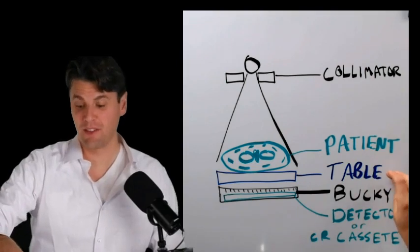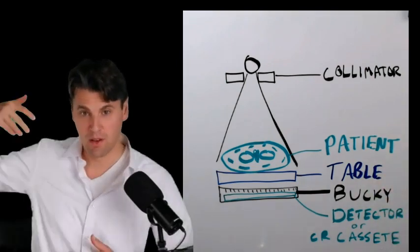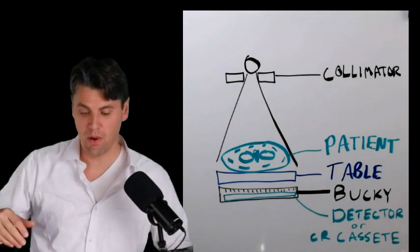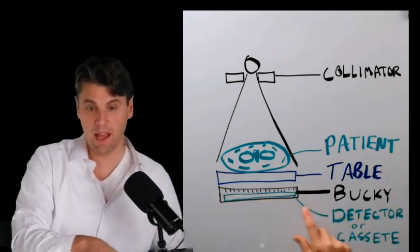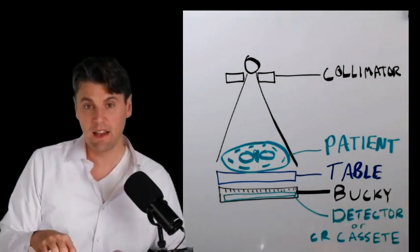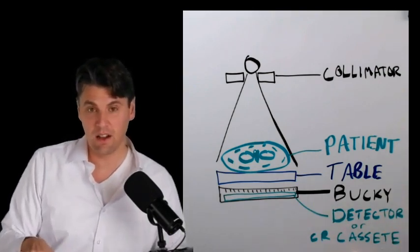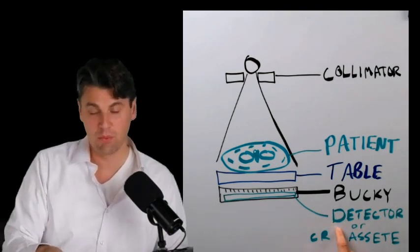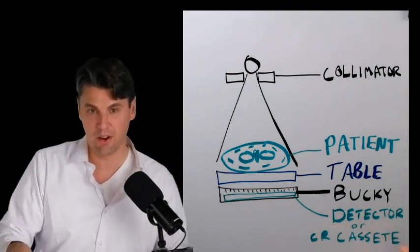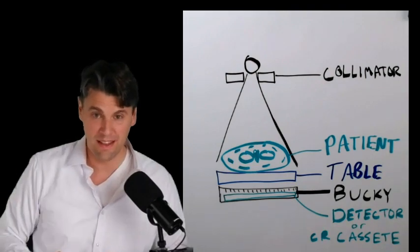The patient is often lying on the table. We'll talk also about standing positions as well. And then you have a bucky and within that bucky you can have a cassette that can actually contain a CR cassette. We'll talk just a minute about what computed radiography is, as well as it could contain a detector. That's in the case of digital radiography.